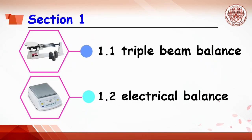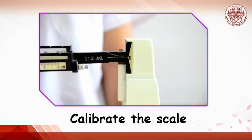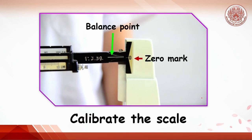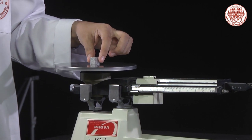In Section 1, two types of balance will be used: the triple beam balance and the electrical balance. The object to be weighed is an aluminum cube. To use the triple beam balance, first calibrate the scale until the balance pointer is at the zero mark, though this calibration is normally already done. Then place the aluminum cube on the pan.